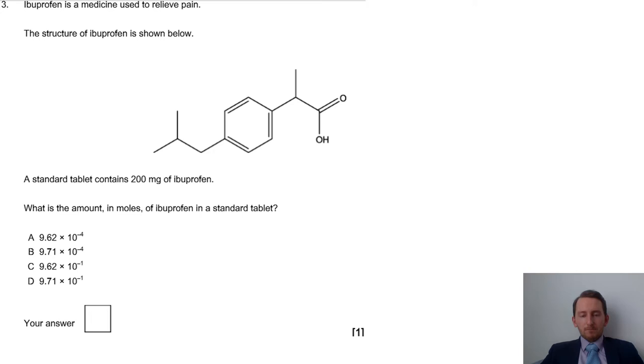Okay, so ibuprofen. We've got a key bit of information which is 200 milligrams of ibuprofen. It asks us what is the amount in moles of ibuprofen in a standard tablet? You're going to have to do some calculations. I've got to work out the moles. The equation for moles is mass divided by the Mr. The question has given me the mass, but we don't work in milligrams, we work in grams. So I've got to do my conversion: 200 milligrams is 0.2 grams.